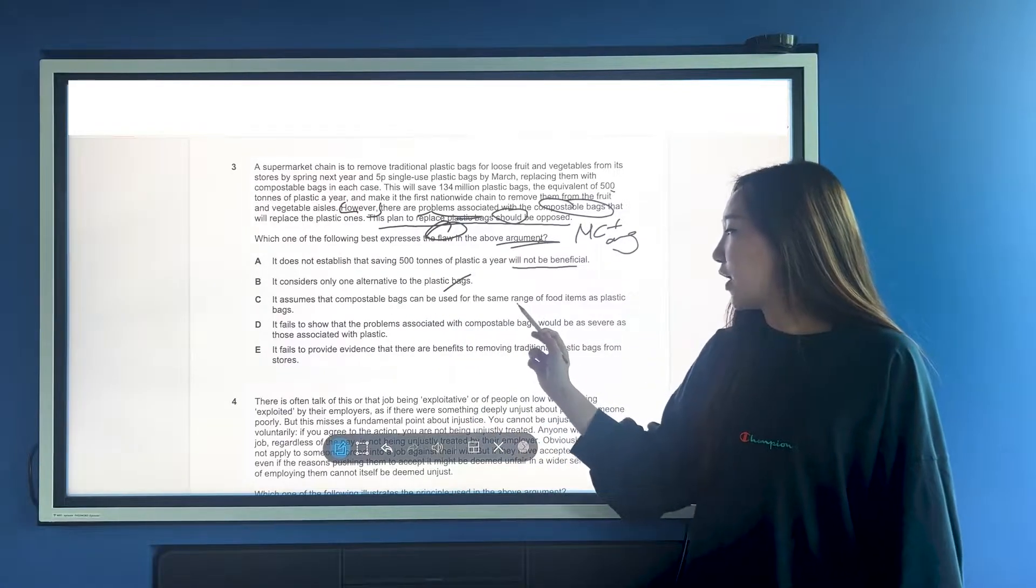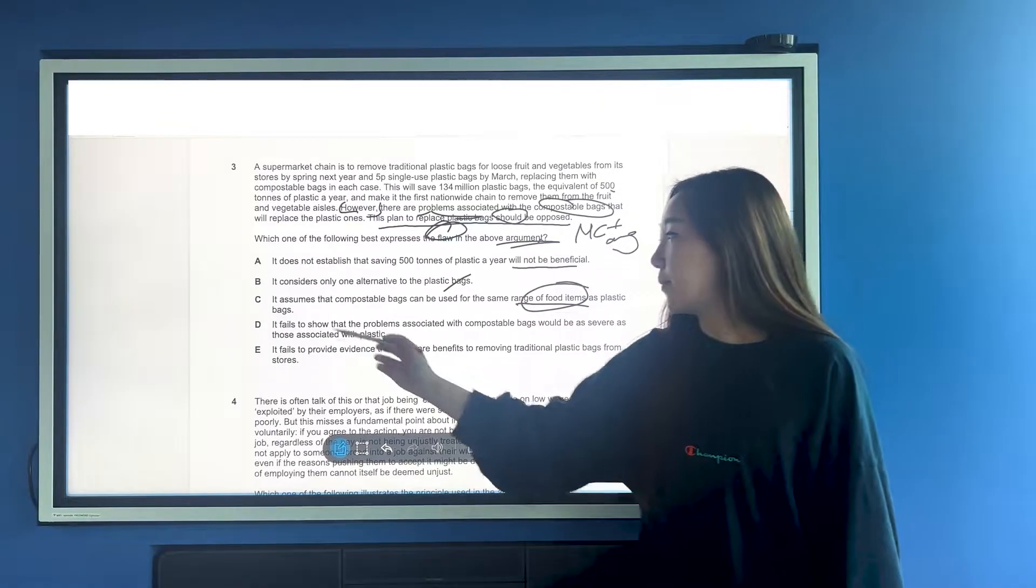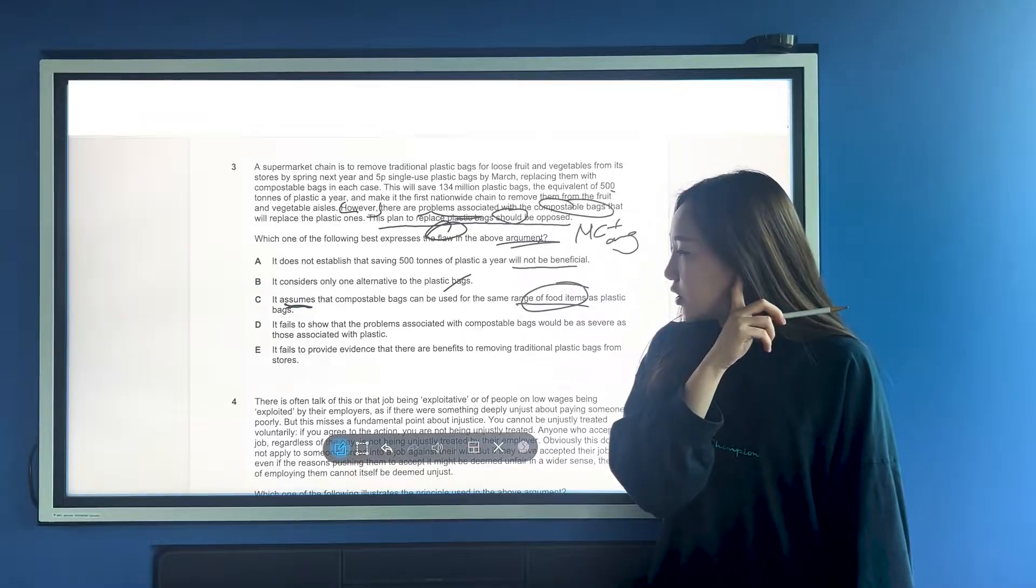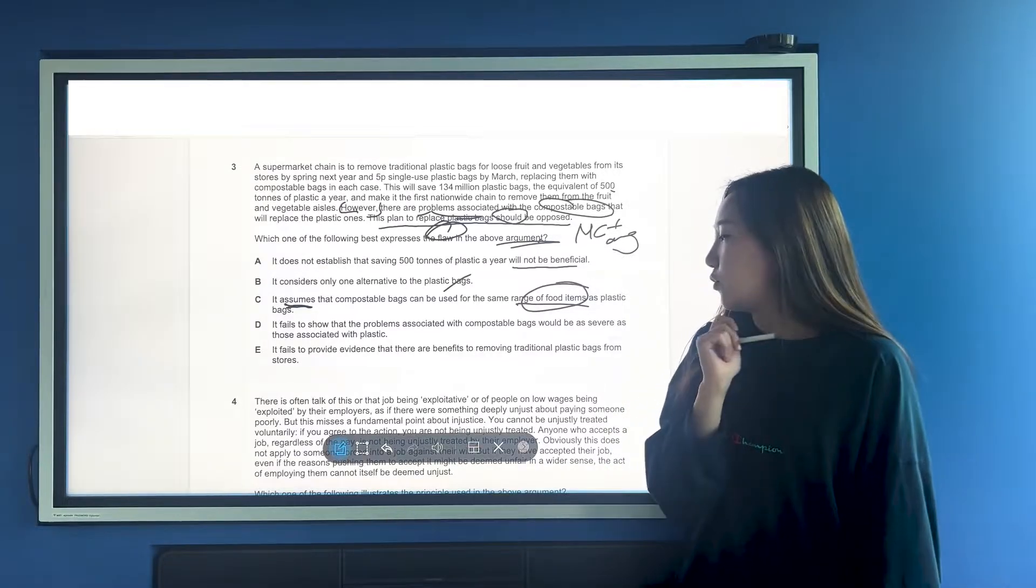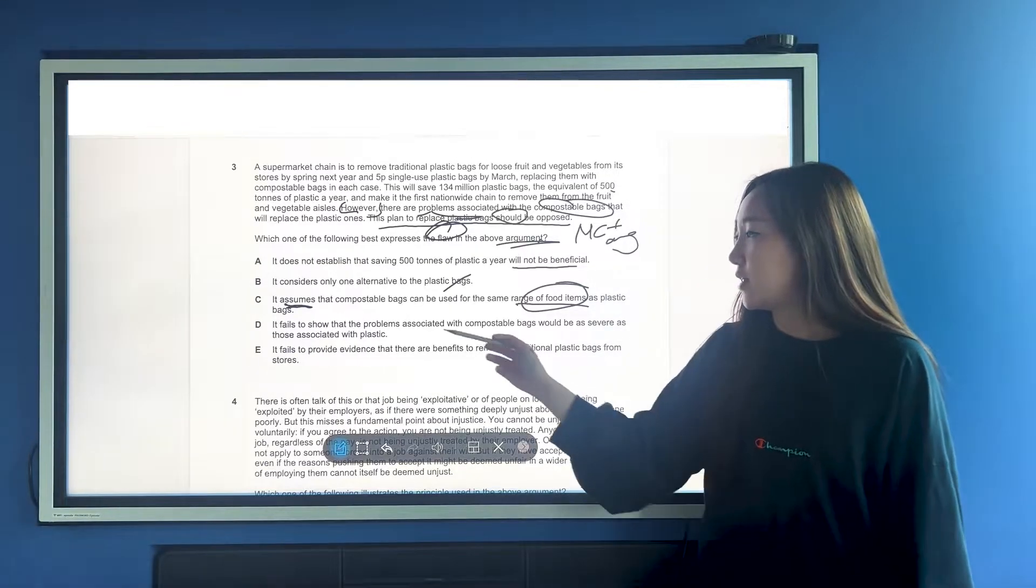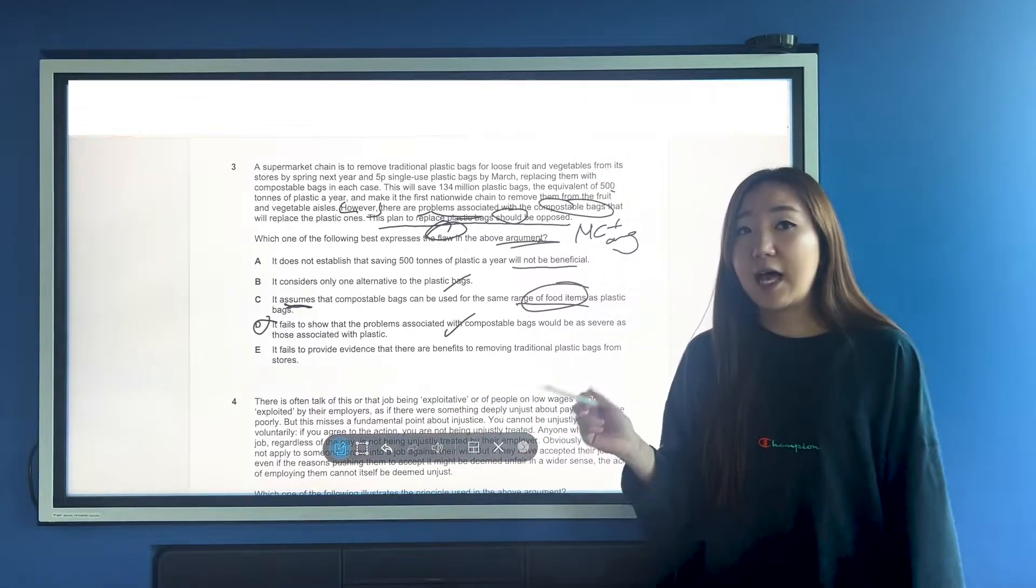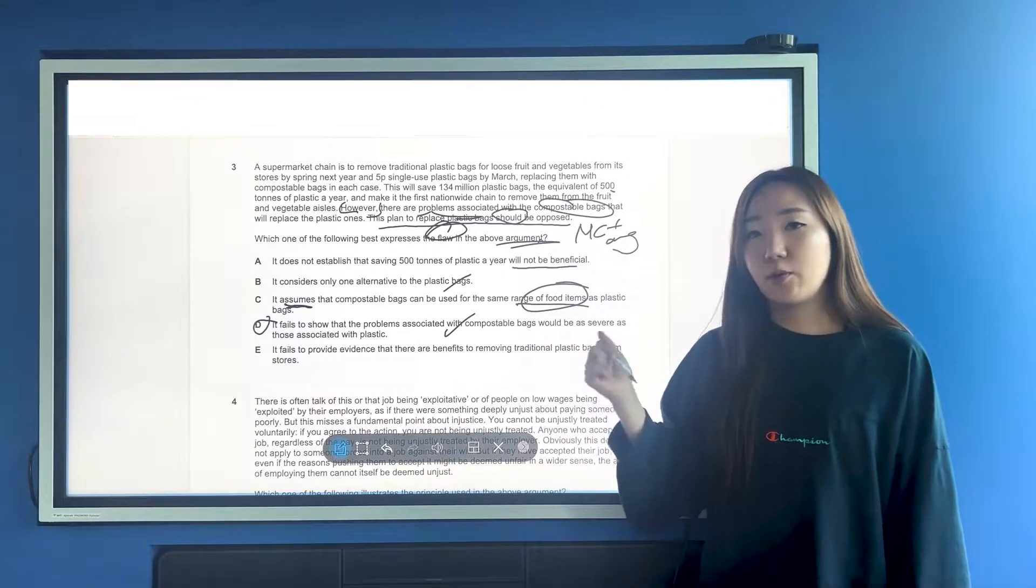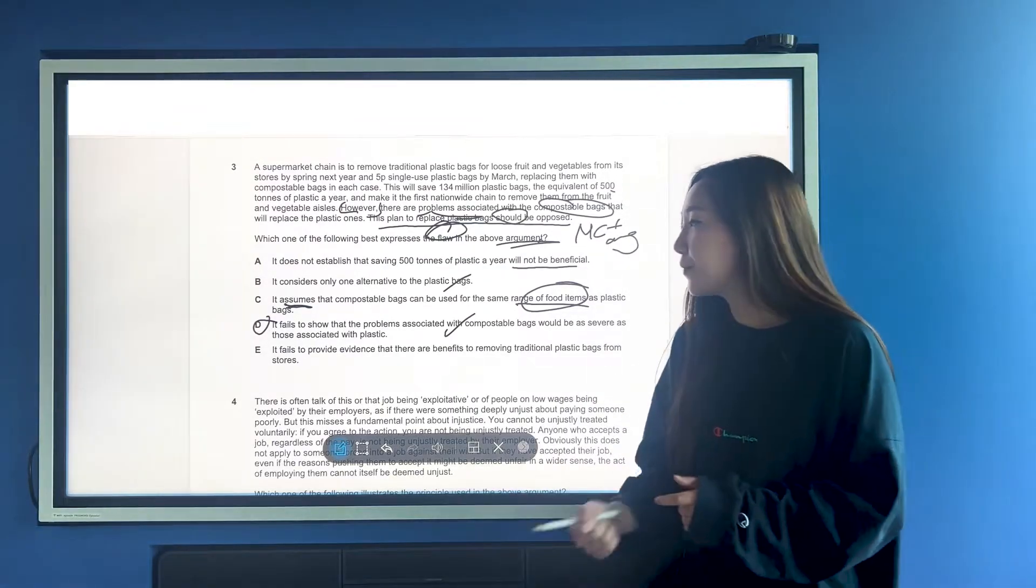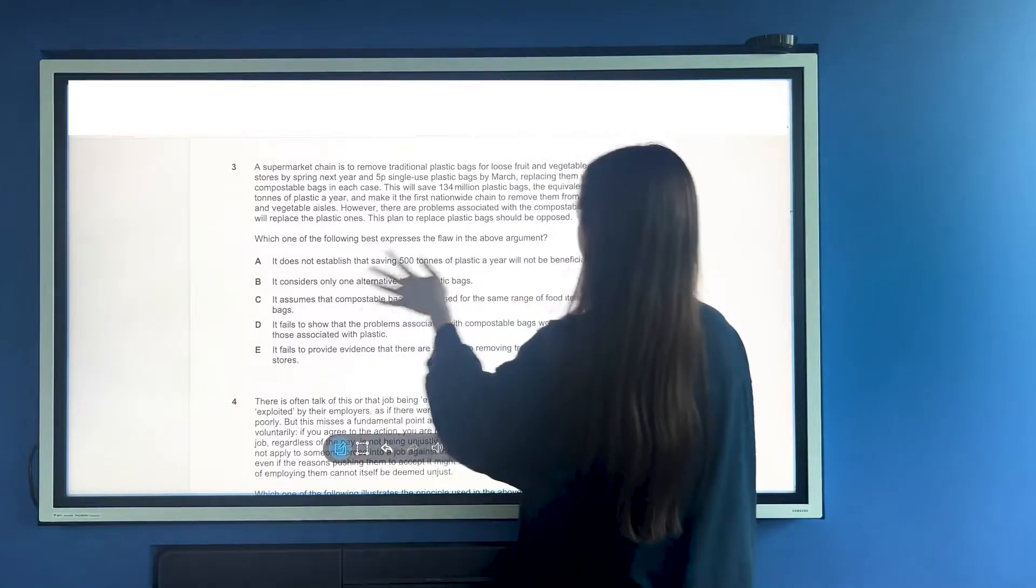C, compostable bags can be used for the same range - this is more of an assumption point. You can tell that in the language right here, it assumes. D, it fails to show that the problems associated with compostable bags would be as severe as those associated with plastic. So yeah, this is the one that we want. They haven't considered all the problems with compostable as much of an issue, because they have to look at both sides of the argument. This one's quite a nice and simple one.